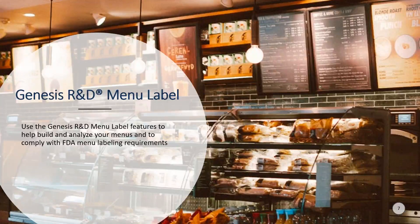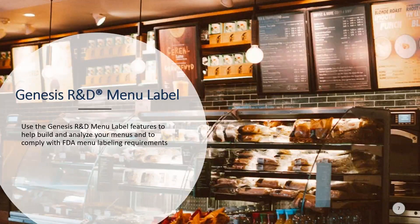If in your Genesis R&D software you see the term 'food menu' for these features, that means you're using an older version — it could be version 11.4 or prior. If that's the case, please contact our sales team for information on obtaining the current version so that you have access to the current features and all of the options. Today I'm showing version 11.7.